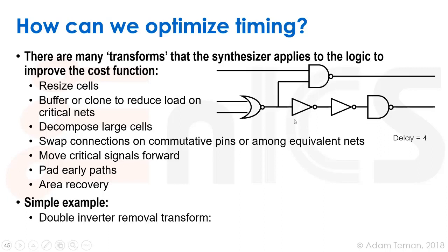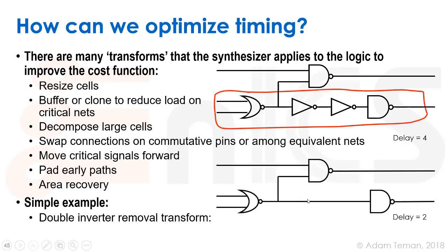Let's take a simple example. After doing all kinds of synthesis and technology mapping and so forth, we arrive at this type of netlist, and we see here that these two inverters are in line and they actually aren't doing anything - they're just buffering a signal.